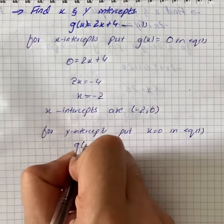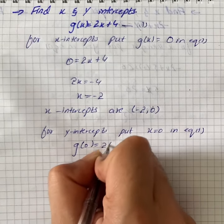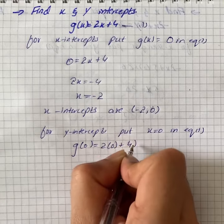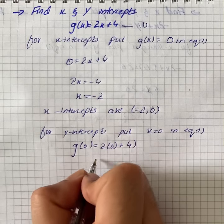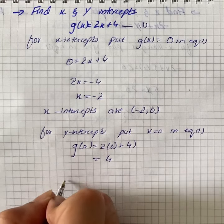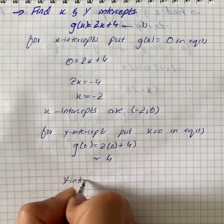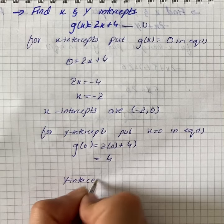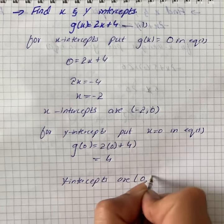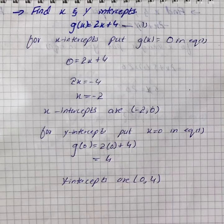For y-intercept, put x = 0 in equation 1. It gives us g(0) = 2(0) + 4, which turns out to be 4. So our y-intercepts are (0, 4).